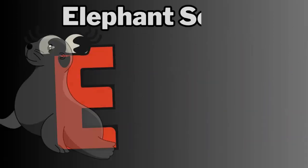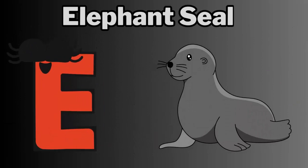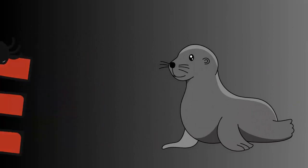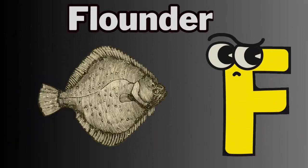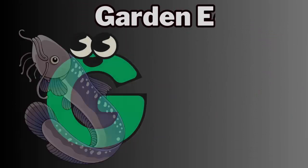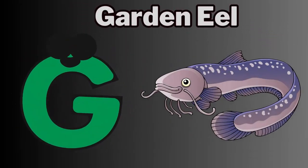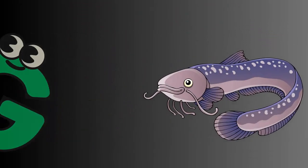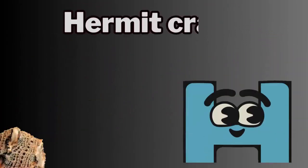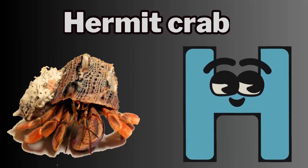E for Elephant Seal, F for Flounder, G for Garden Eel, H for Hermit Crab.